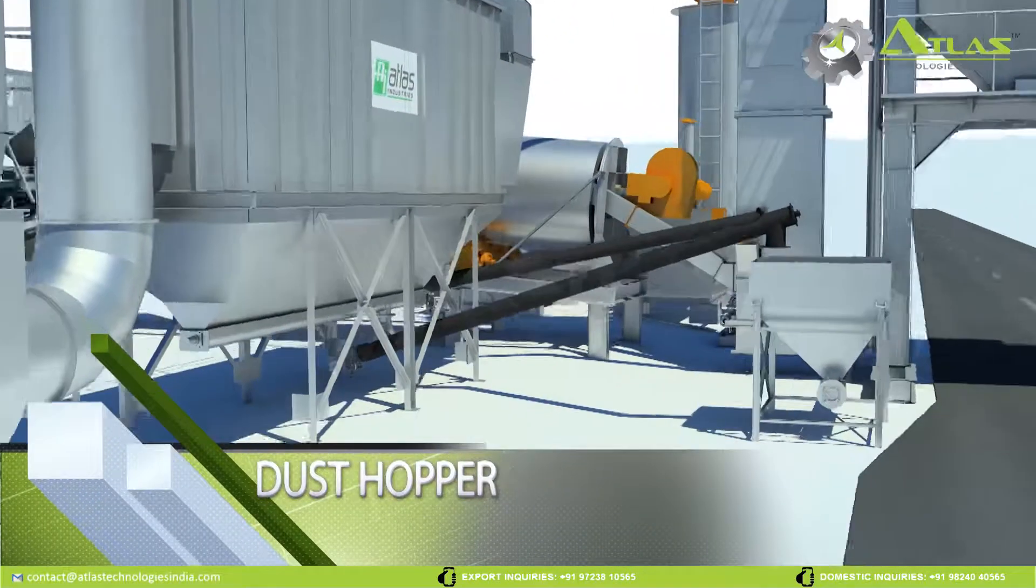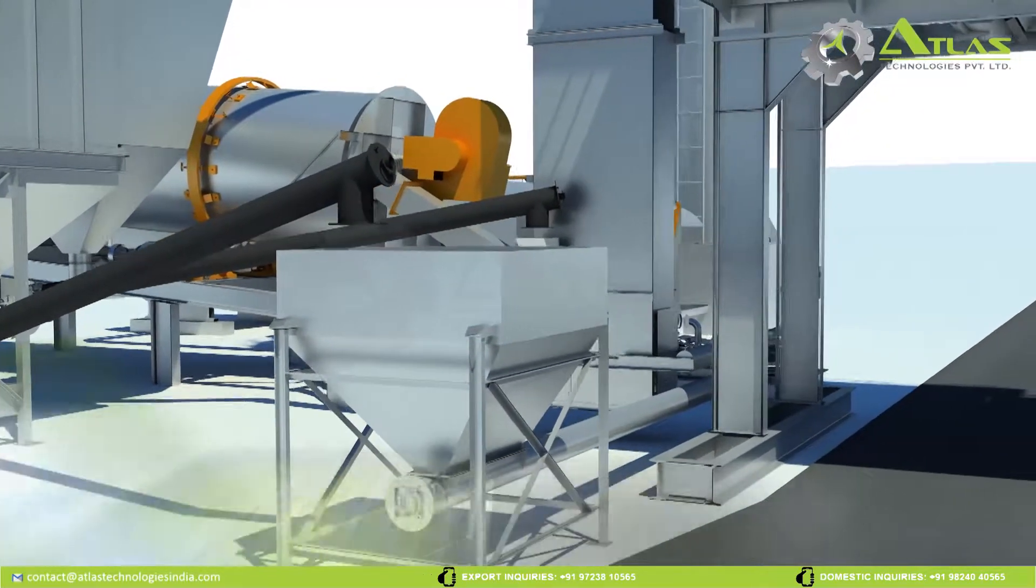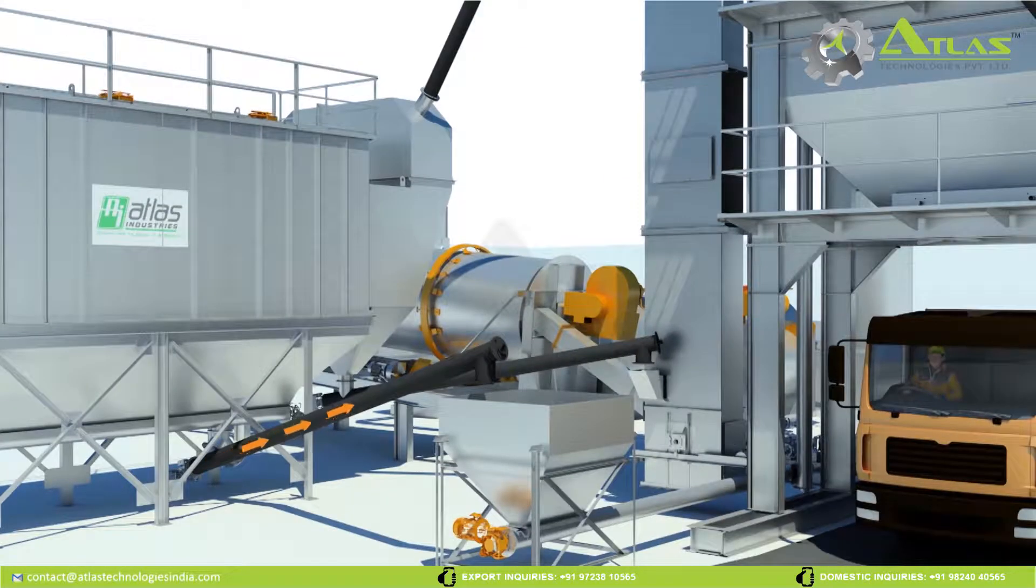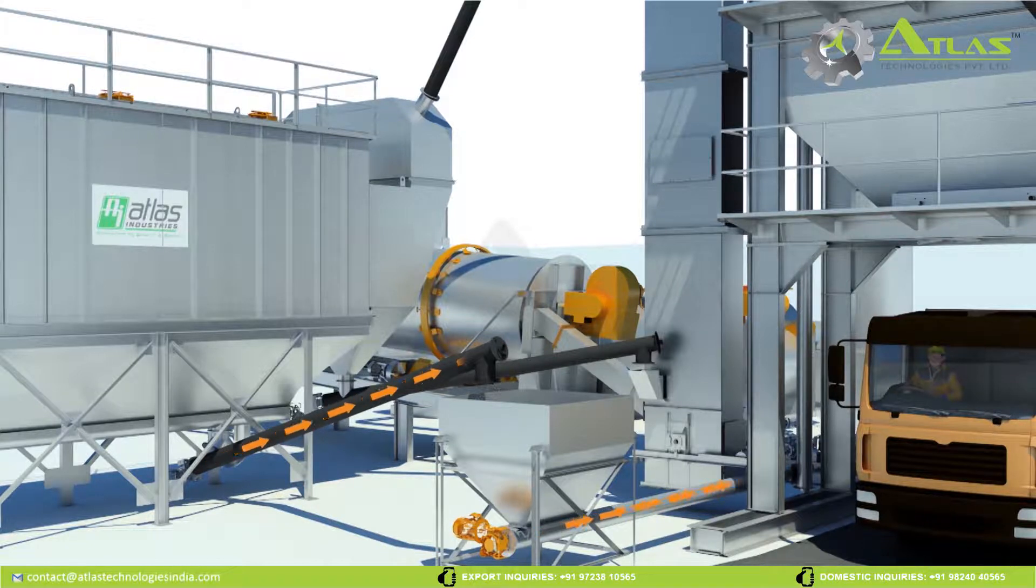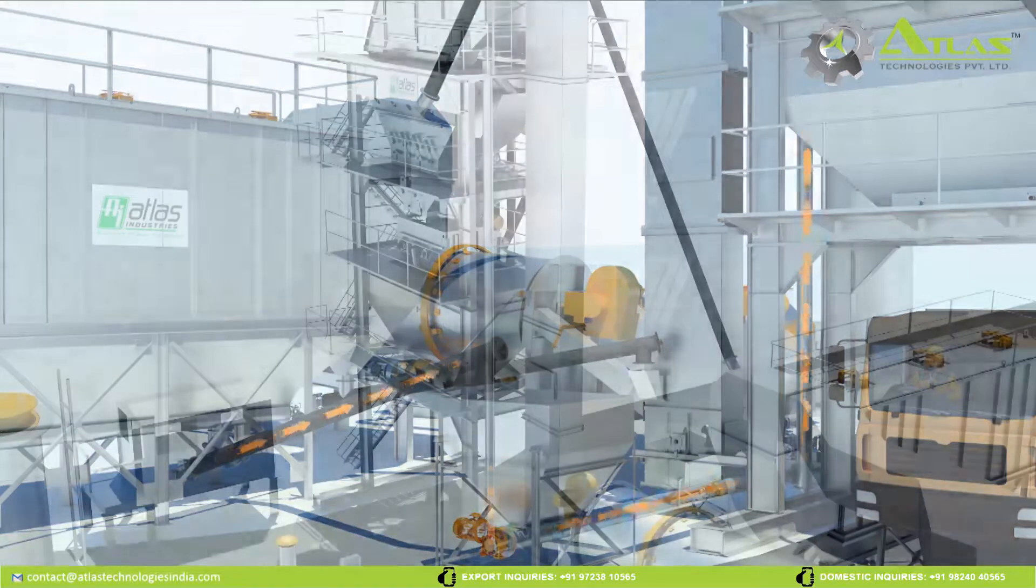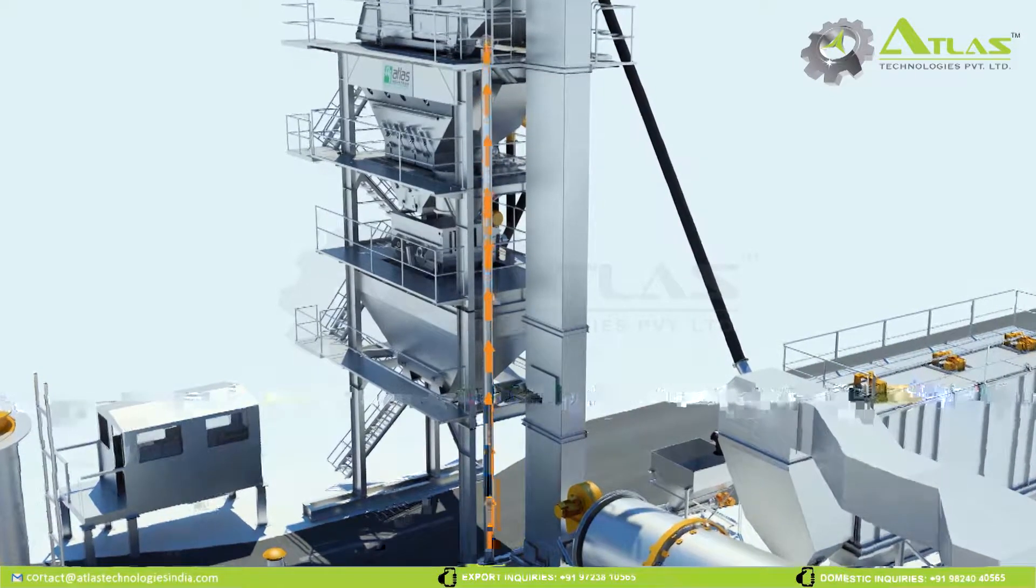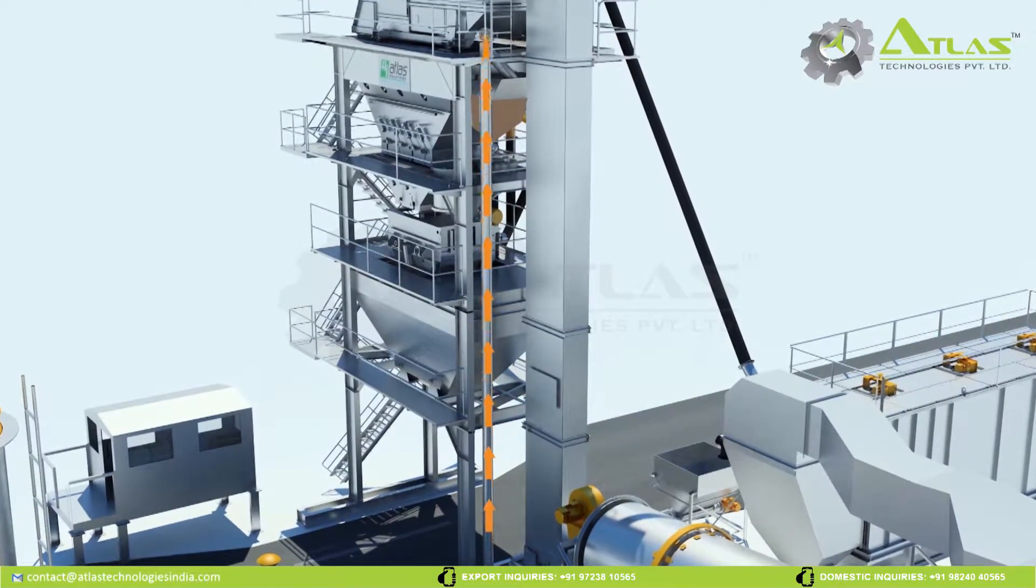Dust Hopper. All the dust collected from bag house is accumulated in the dust hopper. Dust from external sources can also be added to dust hopper. This collected dust is transferred to the dust storage hopper mounted on tower via screw conveyor.